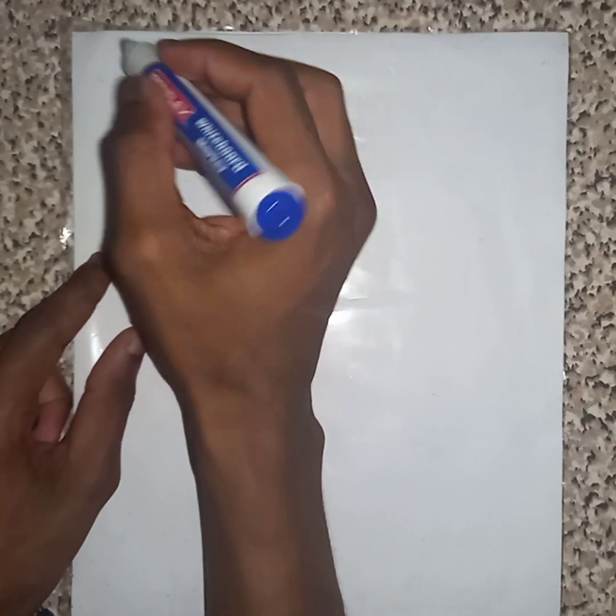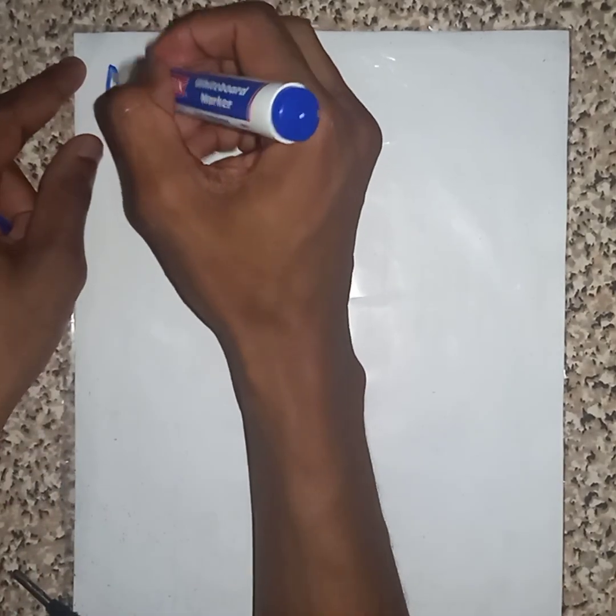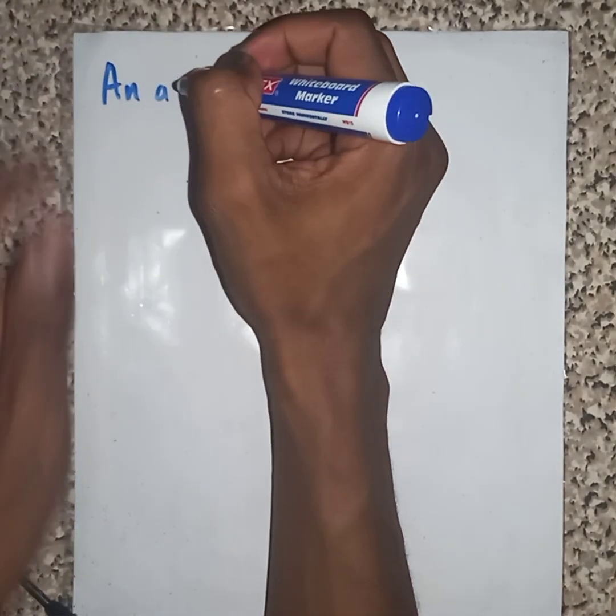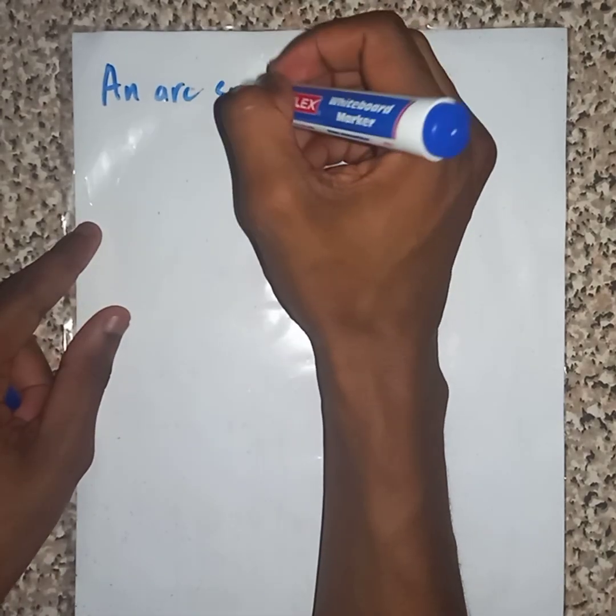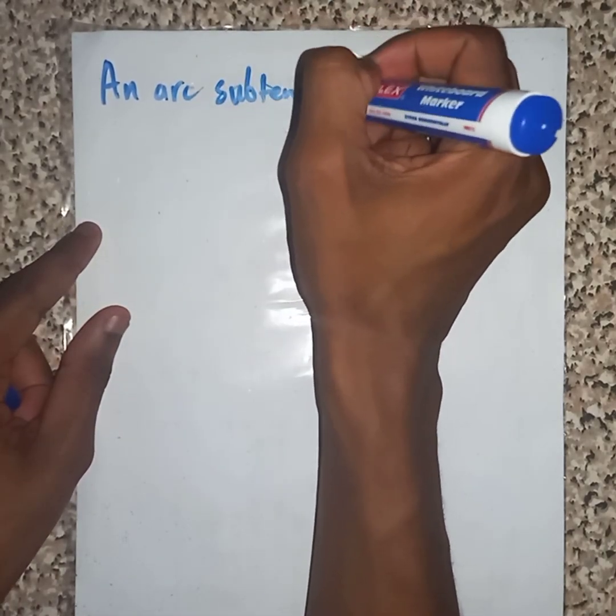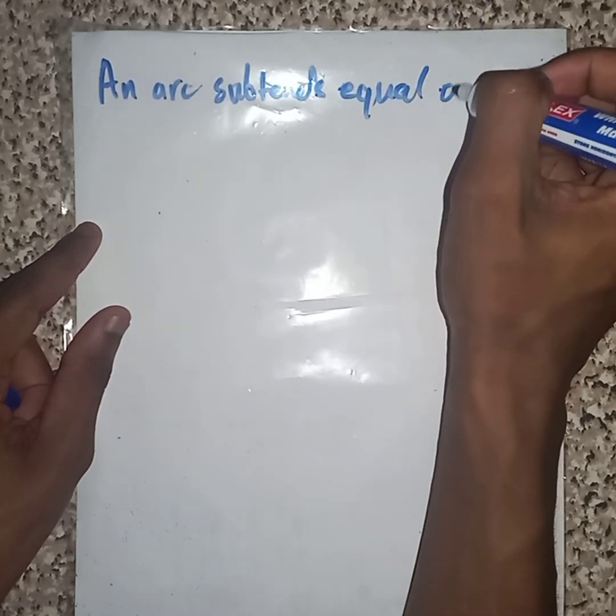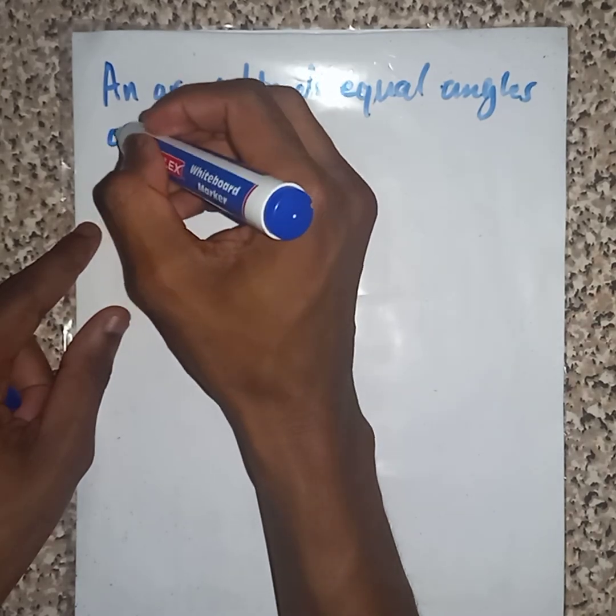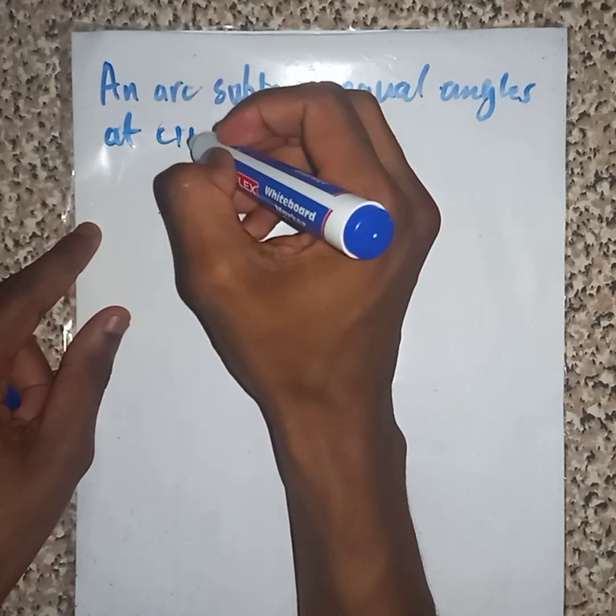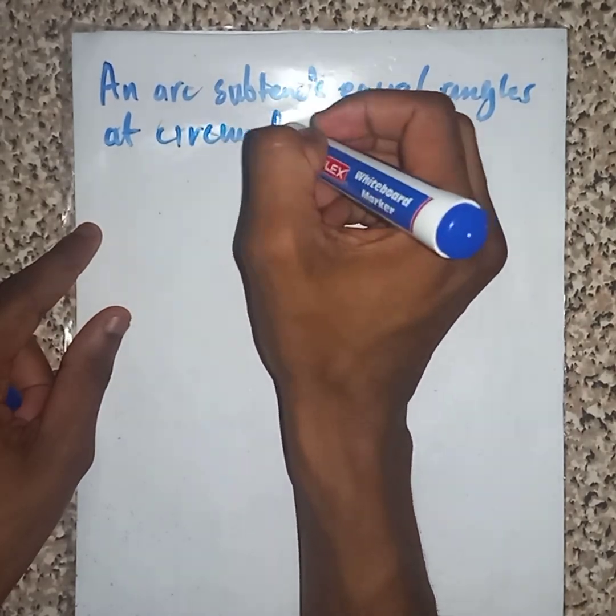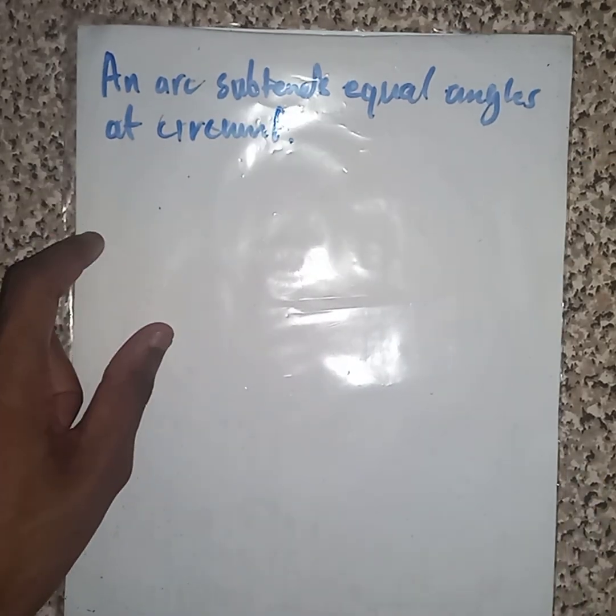Okay, so welcome back. This is just a continuation of theorems. Let us see theorem number four. State it. So simple. State: an arc subtends equal angles at circumference. Now there's no need to know the proof, but I'm going to do it anyway.